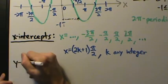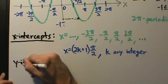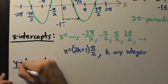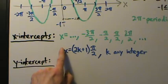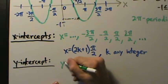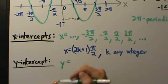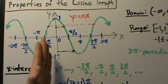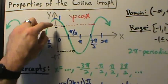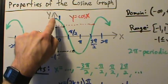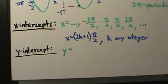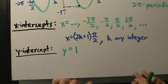How about the y-intercept? Y-intercepts are usually easier because there's at most one of them. A y-intercept is a y-value where we're on the y-axis. Looking at the graph, when x = 0, y = 1. So our y-intercept is y = 1. That's quite a bit simpler than the x-intercepts.